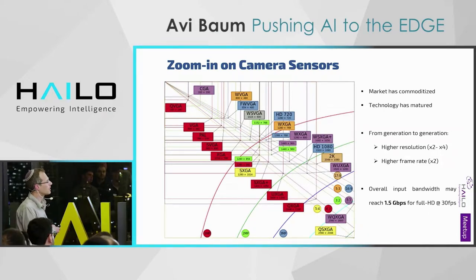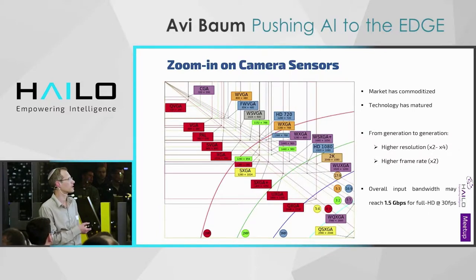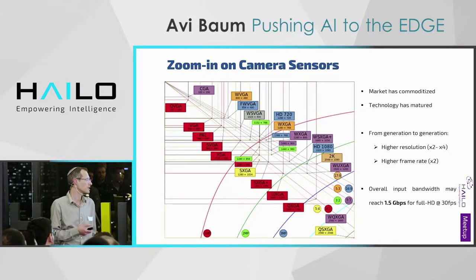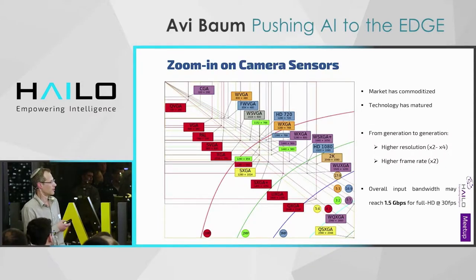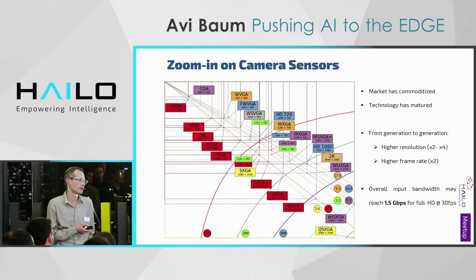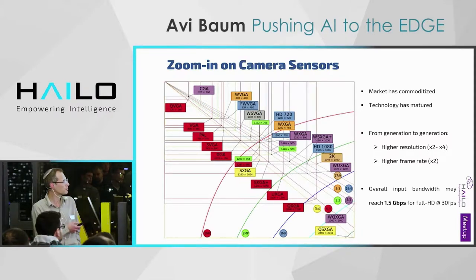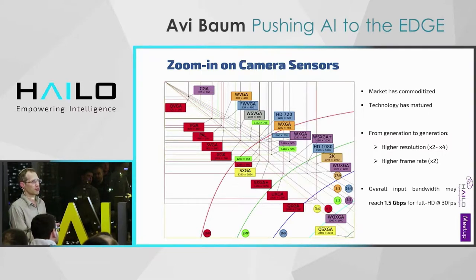A few more important points: the market commoditizes, so the technology is now good enough to quickly expand and improve generation to generation. Higher resolutions create a factor of 2 to 4 in the input stream, and higher frame rates create yet another factor each generation. Overall, we get an input bandwidth that can be in the gigabit-per-second range, and this is what the digital processing engine needs to handle.